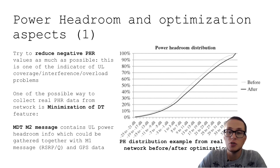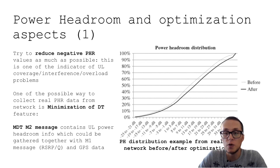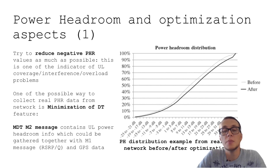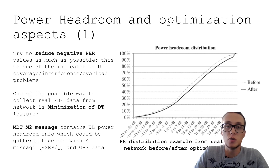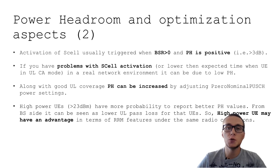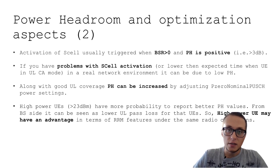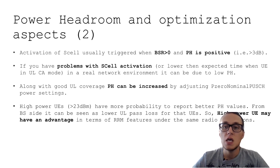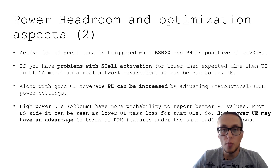On this graph I want to share a hypothetical example of power headroom distribution before and after optimization. We can see that the number of negative values is reduced after some optimization activities. Power headroom distribution can also be used as a metric of uplink coverage. Regarding carrier aggregation, uplink carrier aggregation is usually triggered when the buffer status report is positive and power headroom is positive — typically around 3 dB.